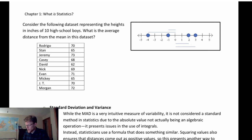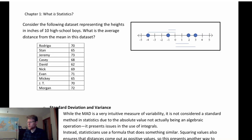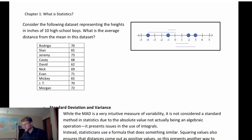First I need to calculate the average from this sample. I'm going to add these values up and then divide by 10. Dividing by 10, I get 68.5. So x-bar in this example came out to 68.5.